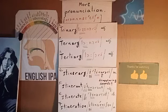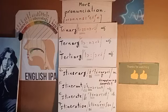Itinerant is a four-syllable adjective. The second syllable 'T' is also a stressed syllable. We say itinerant, which means a person who is traveling from place to place is itinerant.